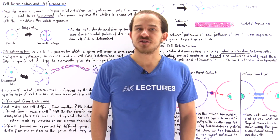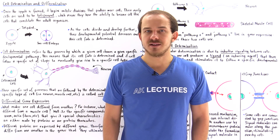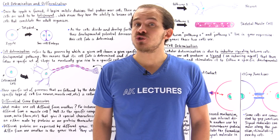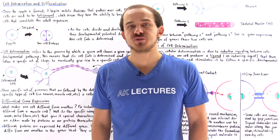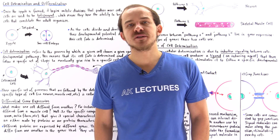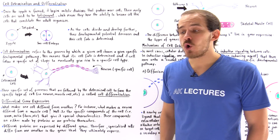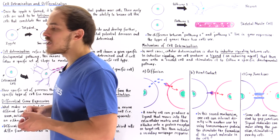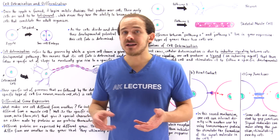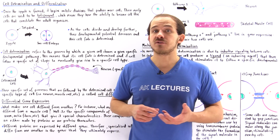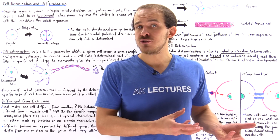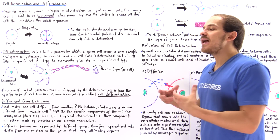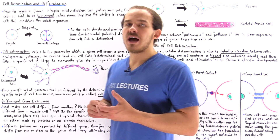Within the adult human organism, we have billions upon billions of individual cells. On top of that, we have over 200 different types of cells that each carry out their own specific function and have their own specific role in our body. For example, one specialized type of cell is a neuron. A neuron propagates electrical signals and allows communication to take place between different types of cells. And we have many examples of these specialized cells.